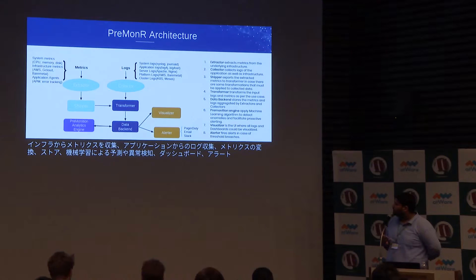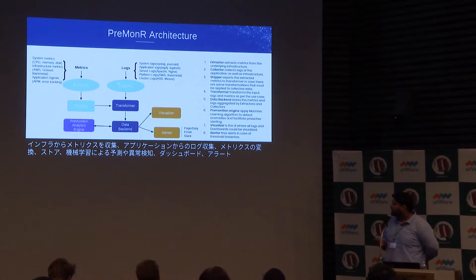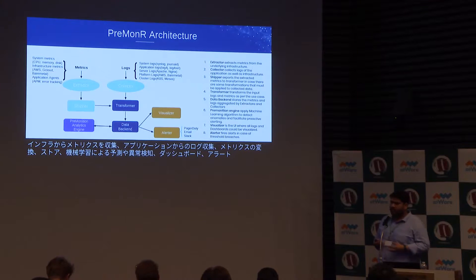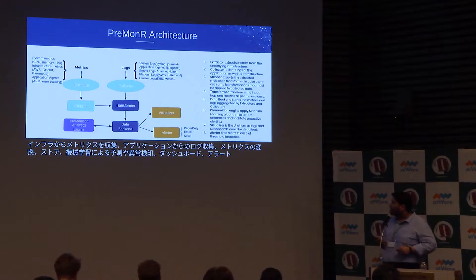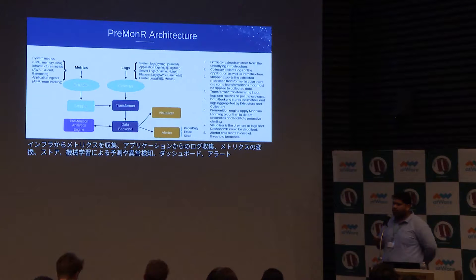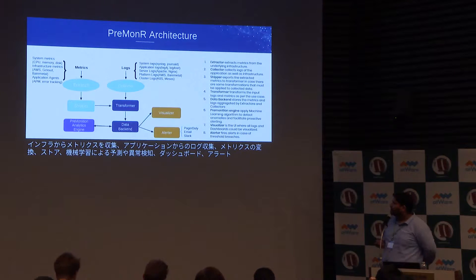For logs, we have a collector — let's say your application or system is generating logs, so this collector collects those logs in a single place and ships them to the transformer. The transformer is basically a rule engine. For example, if you have logs for all your microservices running on Kubernetes, the transformer would segregate those logs on the basis of application and apply certain transformations — such as converting metrics from micro cores of CPU to normal cores.